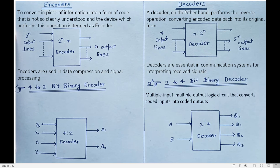Whereas, looking at decoders, the job of a decoder is to take this n-bit input — the n-bit code which is the output of the encoder — and convert that n-bit input into two to the power of n output lines. That is, it is doing the reverse operation, converting the encoded data back to its original form.